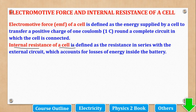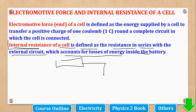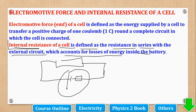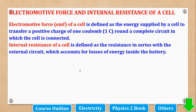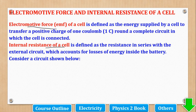Internal resistance of a cell is defined as the resistance in series with the external circuit, which accounts for the losses of energy inside a battery. So the losses of energy inside a battery are due to this internal resistance. A cell itself, apart from the external resistors, will have an internal resistance within it. The resistance of the cell is what we call the internal resistance; the rest of the resistances are called external resistances.